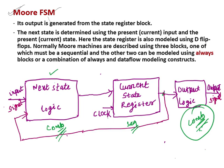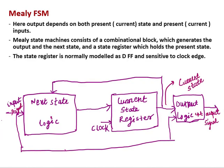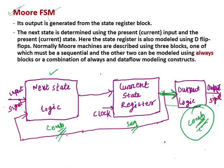Here the output signals purely depend on the current state. In the Mealy state machine, the output logic depends on the current state and also the input. But here in the Moore state machine, the output logic purely depends on your current state — the state the FSM is in. The next state is determined by the input signal and the current state, through this feedback path.